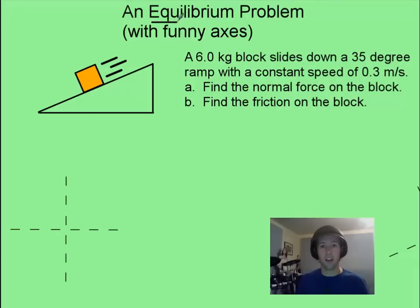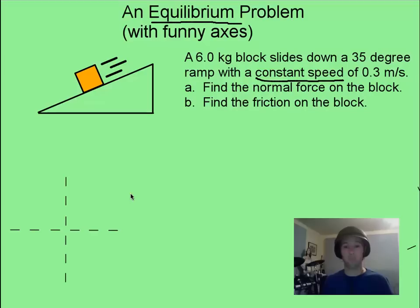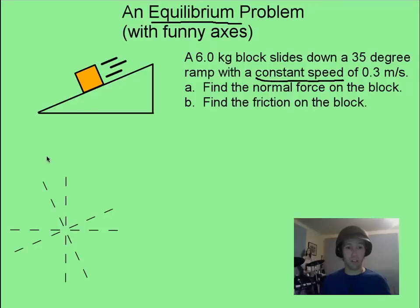Let's have you try an equilibrium problem. You've got a six-kilogram block sliding down at a constant speed, and I'm asking you to find the normal force and the friction on the block. Pause it and give it a think. As a hint, whenever you're dealing with ramps or inclines in physics, it is nice to put in a second set of axes — one corresponding to down the ramp, and one perpendicular to that. Now give it a pause and see if you can draw your forces.